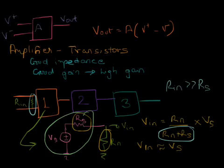If that is true, we can ignore RS and then Rin divided by Rin becomes 1. And thus we get the equation that we want where Vin is approximately equal to Vs.